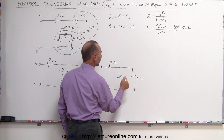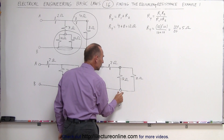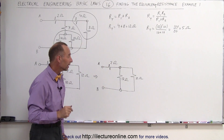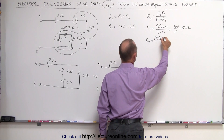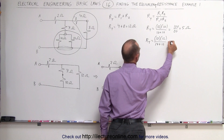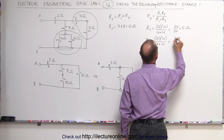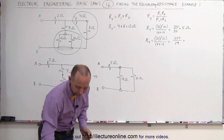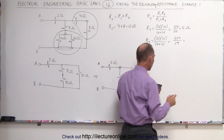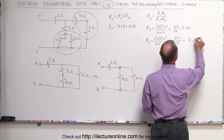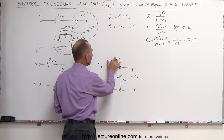Next, we look at the seventeen ohm and twelve ohm resistors and realize they share a pair of common nodes — one on the top end and one on the bottom — so they must be in parallel. The total resistance equals seventeen times twelve divided by seventeen plus twelve: that's two hundred and four divided by twenty-nine, which gives approximately seven ohms. These two combined now make a single seven ohm resistor.